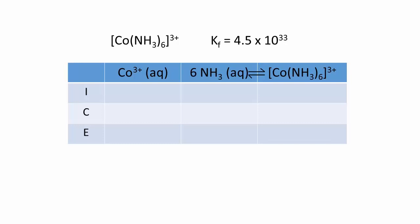Using the hexamine cobalt-3 complex ion as an example, with a formation constant of 4.5 times 10 to the 33, let us follow the procedure for calculating equilibrium concentrations if we place 0.05 moles of cobalt in 1 liter of a 0.75 molar solution of ammonia.